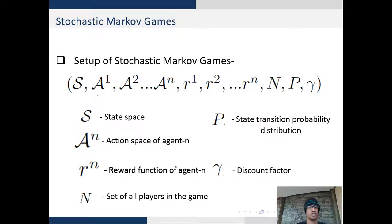A^n is the action space for each agent, r^n is a reward function for each agent, N is a set of all players, P is a state transition probability distribution which maps the current state to the next state, and gamma is a discount factor which we'll discuss in Q-learning.